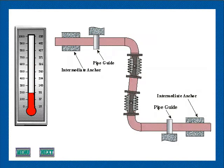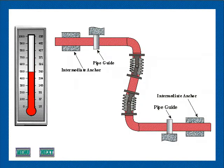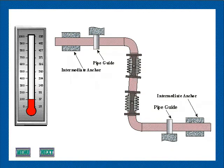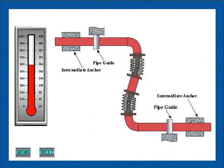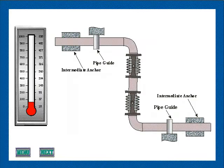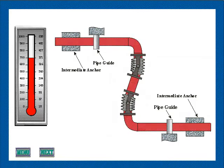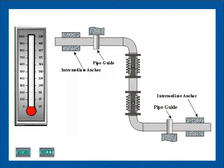The thermal expansion of the offset section containing the expansion joints must be absorbed by bending of the piping legs perpendicular to that segment. Since the expansion joints are restricted to pure angular rotation by their hinges and cannot extend or compress.